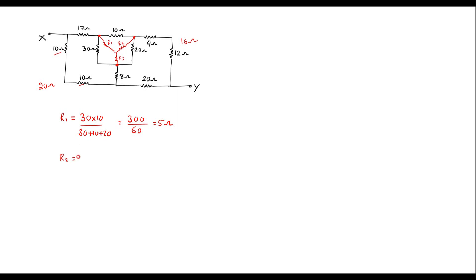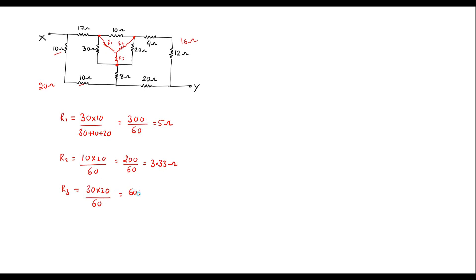R2 can be calculated as: the adjacent resistors are 10 and 20, so R2 equals 10 into 20 divided by 60, which gives 3.33 ohm. R3 is equal to: the adjacent resistors are 30 and 20, so R3 equals 30 into 20 divided by 60. That is 600 by 60, which is equal to 10 ohm.